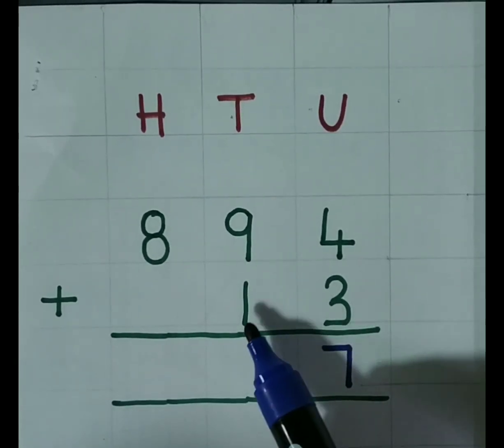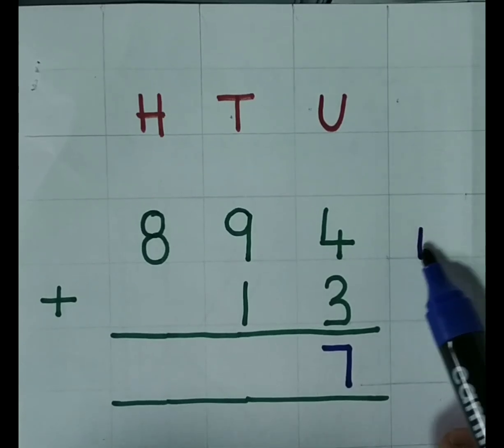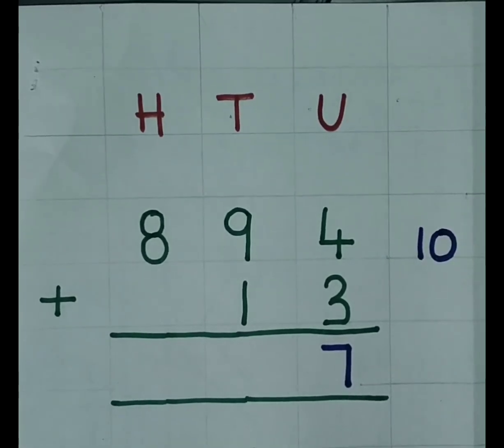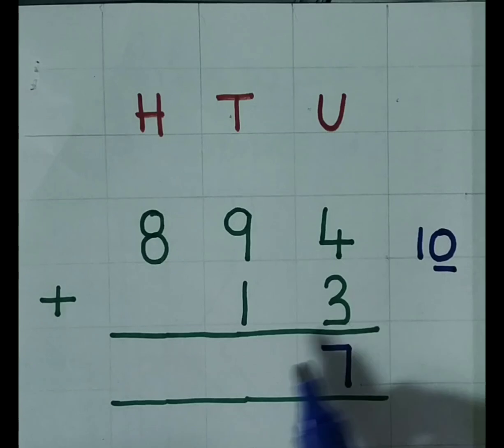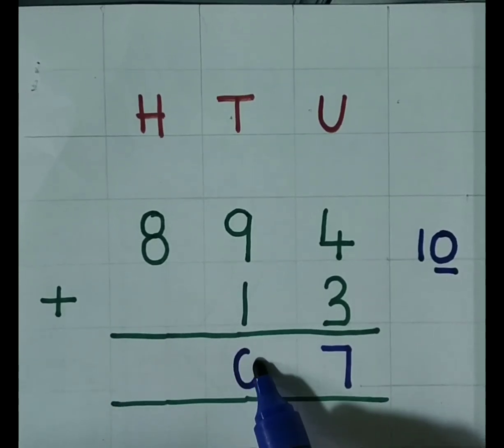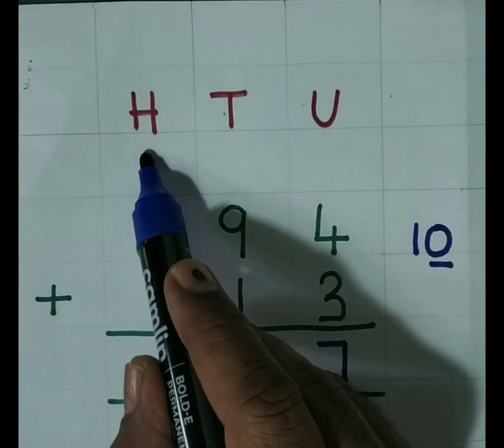9 plus 1, 10. 10 is the two digit number. 0, write here. 1, carry to the 100th place.